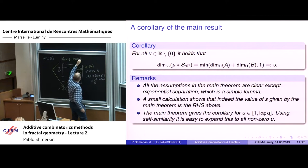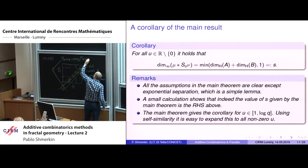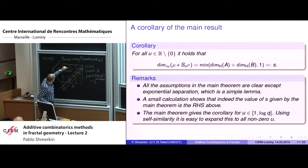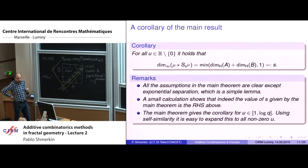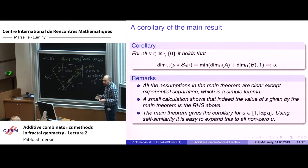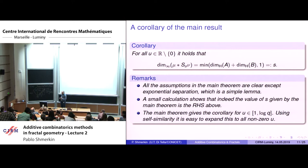I take the product measure and project via the map π_u: this is scaling the y-coordinate by u and taking the addition map, which means convolving. So the projected measure is mu convolved with the scaling by u of nu. We have an upper bound for the projected measure of this interval from the Frostman exponent. The projected mass of this interval is the mass of this strip, so comparing the two bounds, the Furstenberg intersection conjecture comes out. The deduction from the main theorem to the intersection conjecture is very simple.